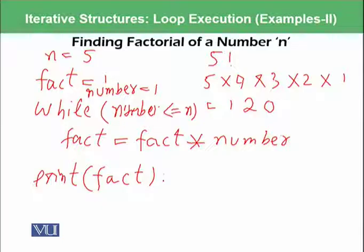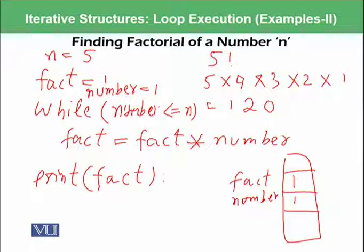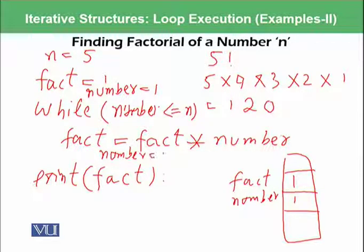So let's try to execute it. Initially, we have fact as 1. We have a memory diagram with fact as 1 and number as 1. We check: is number less than or equal to n? That means 1 is less than or equal to 5 — the condition is true. So fact is assigned fact multiplied by number, which is 1 multiplied by 1, giving 1, stored back in fact. Then we increment number by 1, so number becomes 2 — moving the variable towards the termination condition.